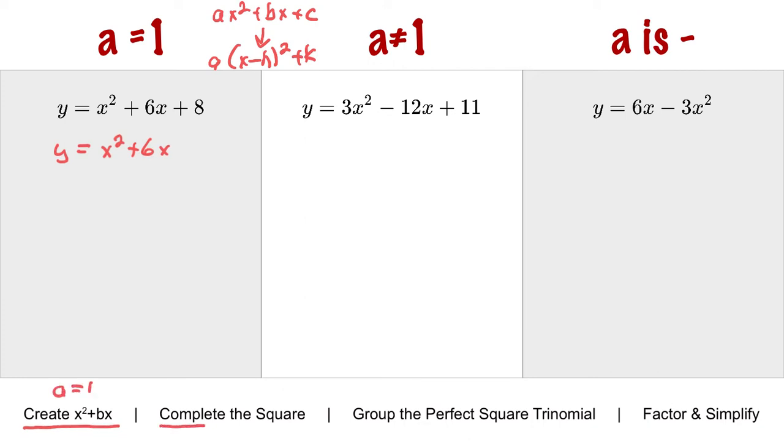The next process is to complete the square. This value of 8 is not the value that will complete the square, so we need to manufacture one. A lot of things in math will change the way something looks, but not change its value. So half of 6 is 3. 3 squared is 9, so I'm going to add 9.